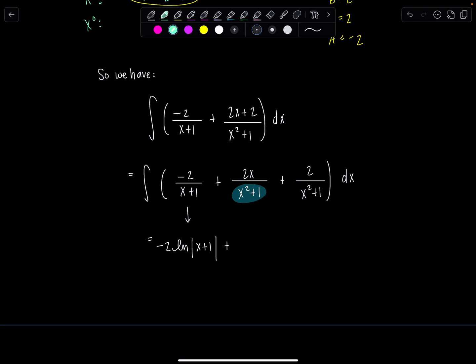If you let u equal x squared plus 1, du is just going to be 2x dx, which is precisely what I have in the numerator.